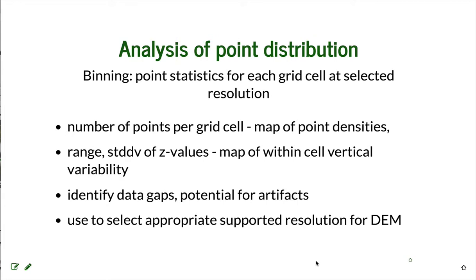Why do we need to analyze point distribution and how do we do that? The best and easiest way to analyze point distribution is based on raster or grid. By defining a grid at a certain resolution, we can compute point statistics for each grid cell at different resolutions. The first basic step is computing the number of points per grid cell — at 1 meter, 3 meter, or 10 meter resolution — and then creating a map of point counts.